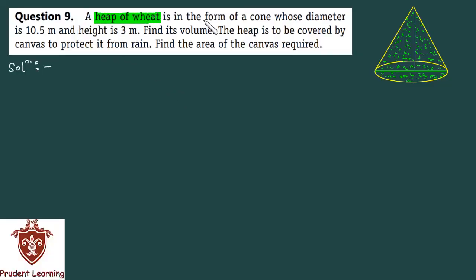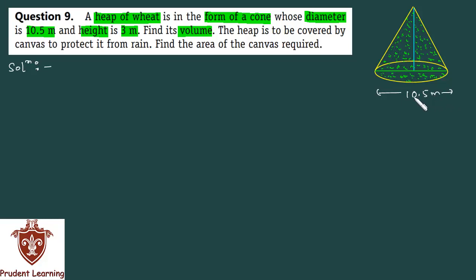A heap of wheat is in the form of a cone whose diameter is 10.5 meters and height is 3 meters. The slant height is unknown. In this question, someone has wheat arranged in a conical shape with diameter 10.5 meters and height 3 meters, and you are asked to find its volume.